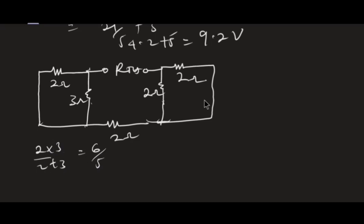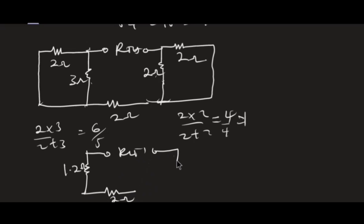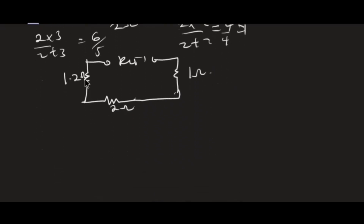The 2 ohm in parallel with 2 ohm gives: (2×2)/(2+2) = 4/4 = 1 ohm. Redrawing, I have 1.2 ohms in series with 2 ohms in series with 1 ohm, connected to RTH. So total RTH = 1.2 + 2 + 1 = 4.2 ohms.